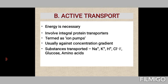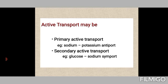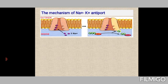Active transport involves expenditure of energy, operates against a concentration gradient, and transports both ions and large molecules. It may be primary active transport or secondary active transport. Primary active transport directly uses energy — an example is the sodium-potassium antiport. Secondary active transport does not involve direct usage of energy — an example is the glucose-sodium symport.